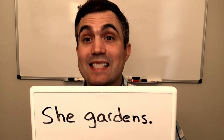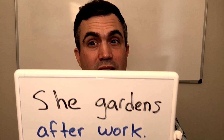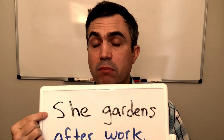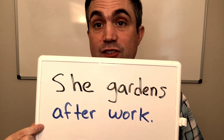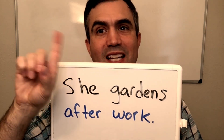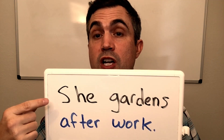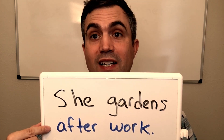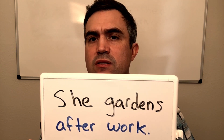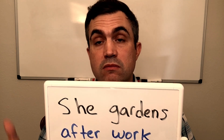So let's write the sentence again with an adverbial clause. 'She gardens after work.' She gardens, in black, is the independent clause. 'After work,' here in blue, is the adverbial clause. It is a dependent clause — it's not a complete sentence by itself. So 'she gardens' is the main clause, and 'after work' is the adverbial clause. You could also say 'she gardens on the weekends.' That's your first example of an adverbial clause — it gives just a little more information and context.